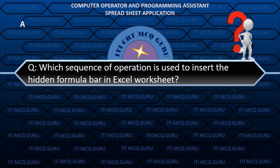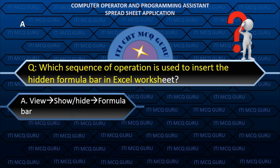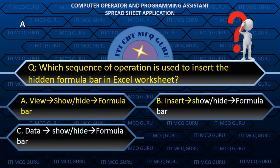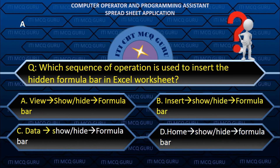Which sequence of operations is used to insert the hidden formula bar in an Excel worksheet? A. View → Show/Hide → Formula Bar.